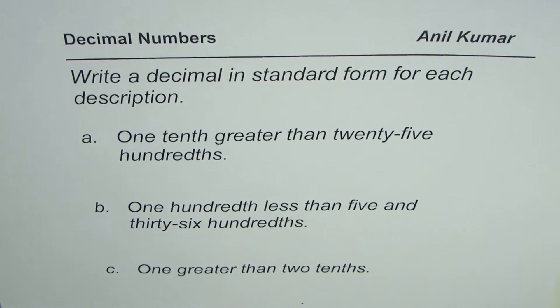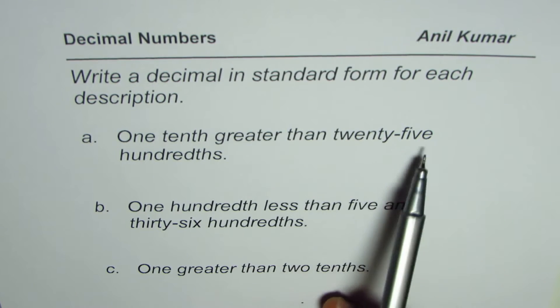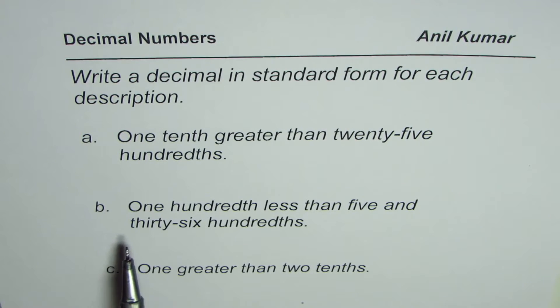There are three parts to it. First one is one-tenth greater than twenty-five hundredths. Then we have one-hundredth less than five and thirty-six hundredths. And the last one is one greater than two-tenths.